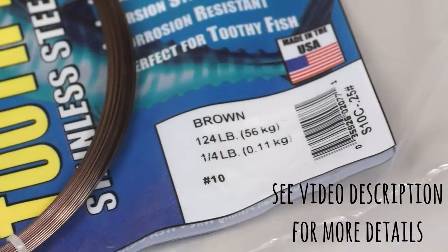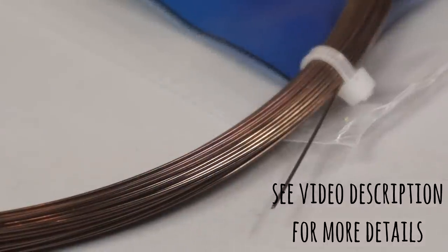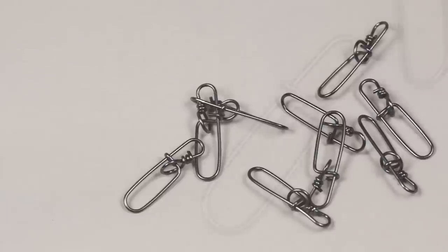Even with a breaking strain over 100lb it has a relatively small diameter. To cover the ends of the wire I'm using heat shrink tubing, and to make the connections to the lure a heavy duty safety snap.